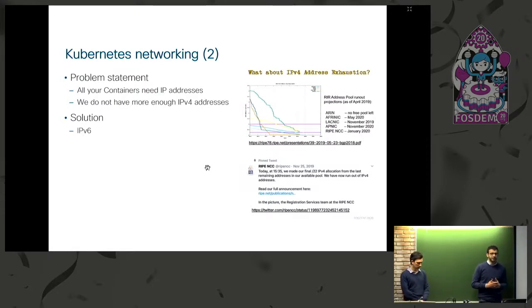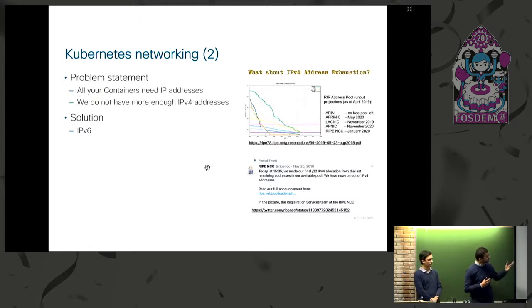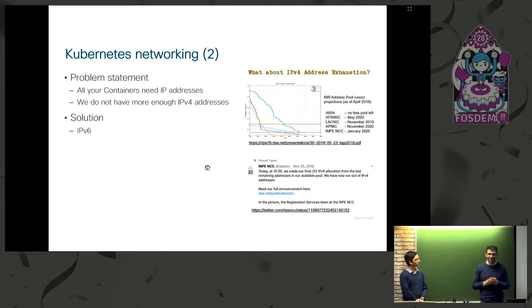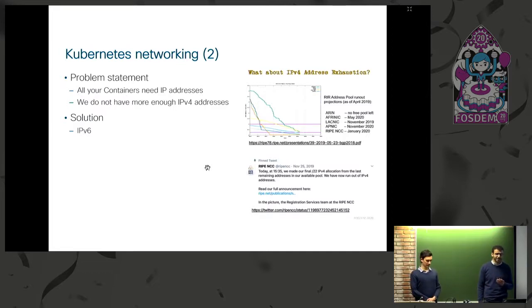For IP addressing, all your Kubernetes pods need IP addresses, and unfortunately we don't have enough IPv4 addresses anymore. In Europe, there was a talk at RIPE 78 projecting when IPv4 addresses would be exhausted. It was supposed to finish by January 2020, but three months before that they announced the last prefix had already been assigned. So we don't have any IPv4 anymore in Europe.